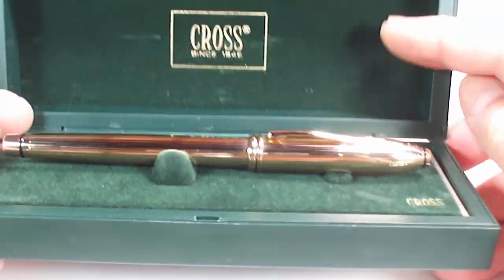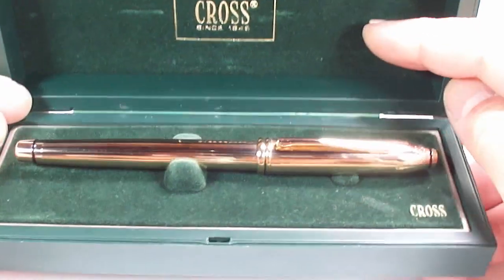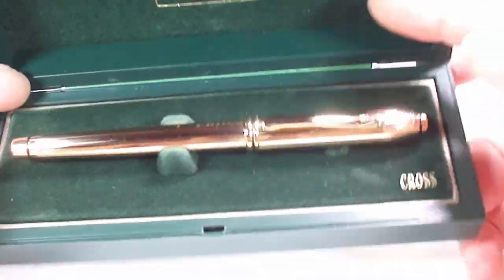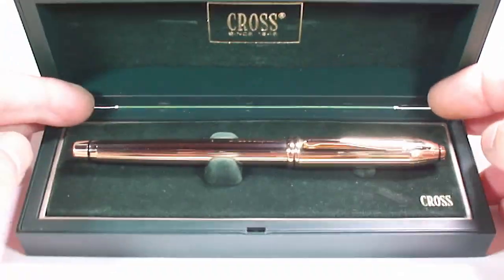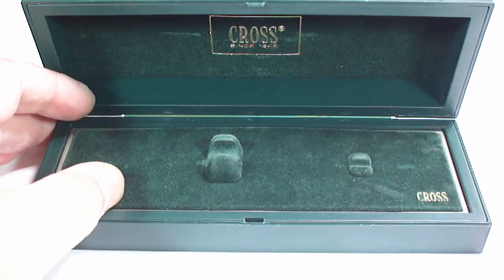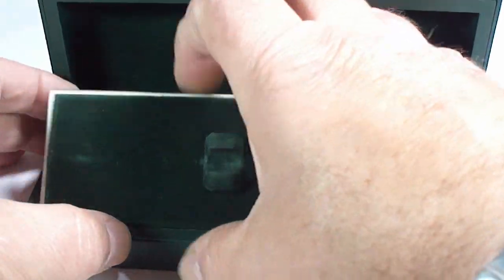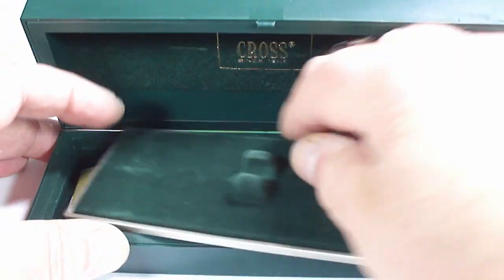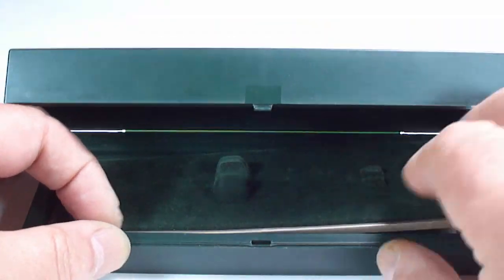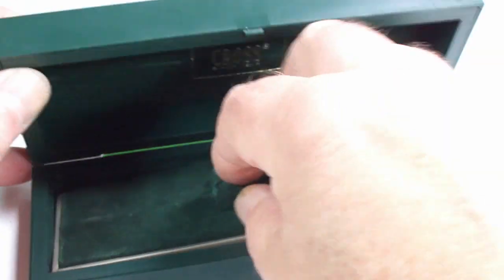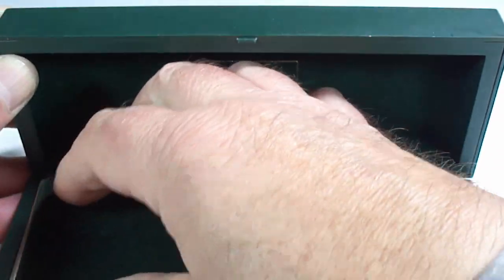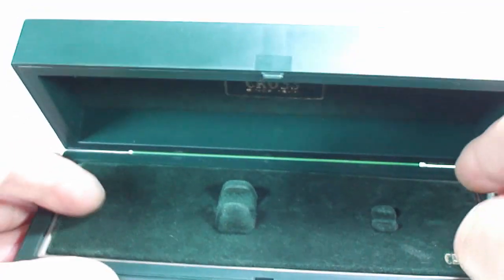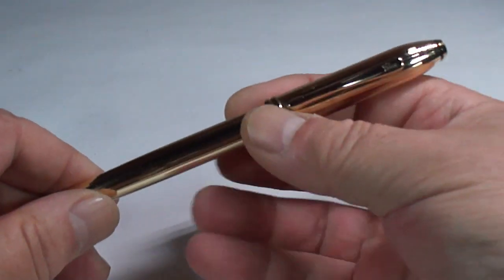There we have it, the pen inside this green velvety sort of case. It's got Cross down the right-hand side. Let's take the pen to one side. Inside there we've got the Cross instructions, and here's the pen in question.